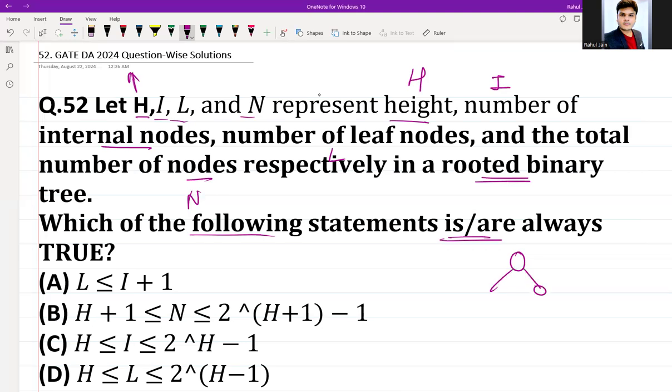Let's consider an example, a hypothetical tree. If you see the height of this tree is 2, so H equals 2. The internal nodes are here - one, two, and three, so three internal nodes. The leaf nodes are one, two, three, four - four leaf nodes. And the total number of nodes N is seven.